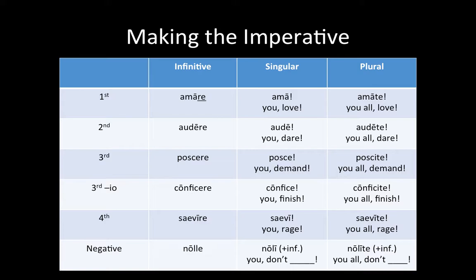The fourth conjugation is back to the same pattern as the first and second conjugation. Drop the -re, and you have a singular command: 'you, rage' — 'be angry.' Throw a -te on the end, and you have a plural command: 'you all, rage.'